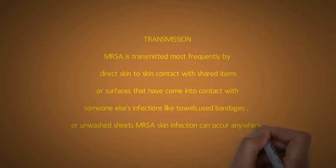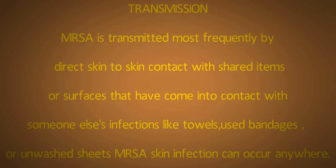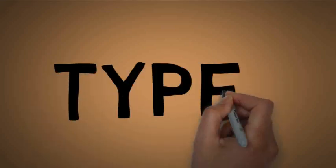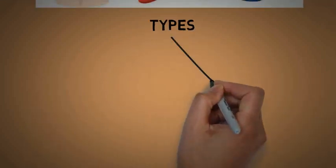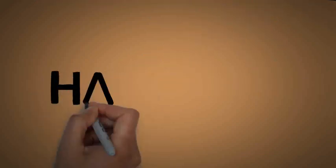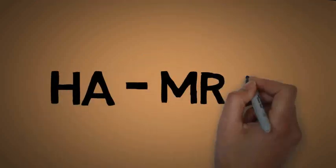MRSA skin infections can occur anywhere. There are mainly two types of MRSA: HA-MRSA and CA-MRSA.